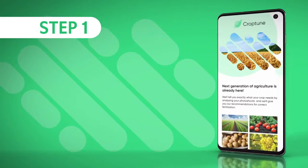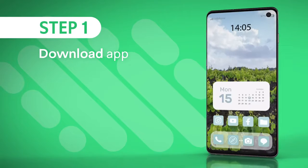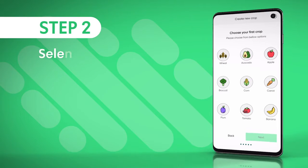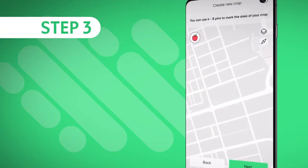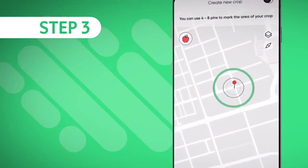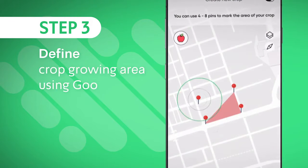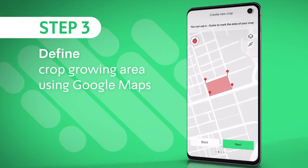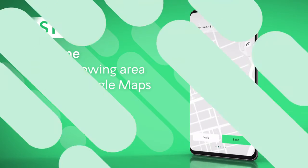Step one: download the CropTune app and sign up. Step two: select your crop type from the menu. Step three: define your crop growing area. The smart system will quickly locate your field using Google Maps.